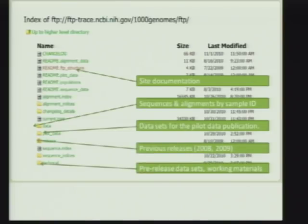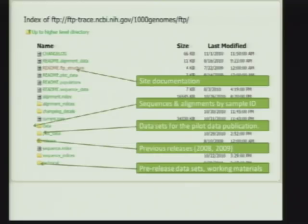Going into the FTP site, a few core paths are useful to know. There are READMEs that document the organization of the FTP site and file formats, kindly hosted by Laura Clark at EBI. There is a folder called 'data' where all alignment and sequence information is posted by sample ID — the Coriell NA number — for all 700 to 1,100 samples, updated nightly. There is also a 'pilot data' folder containing the VCF calls, INDELs, SVs, and everything else released with the Nature paper.